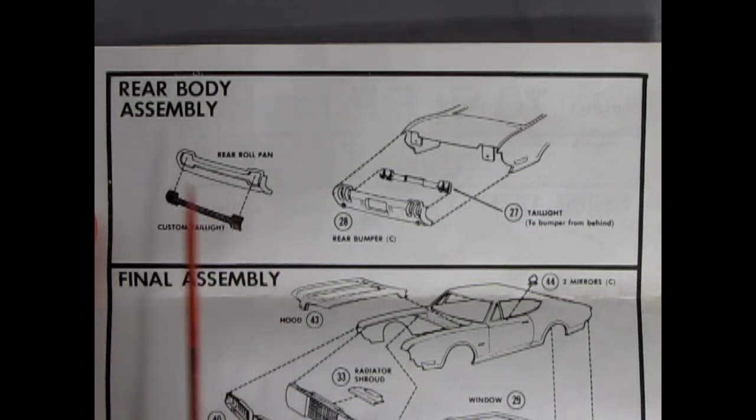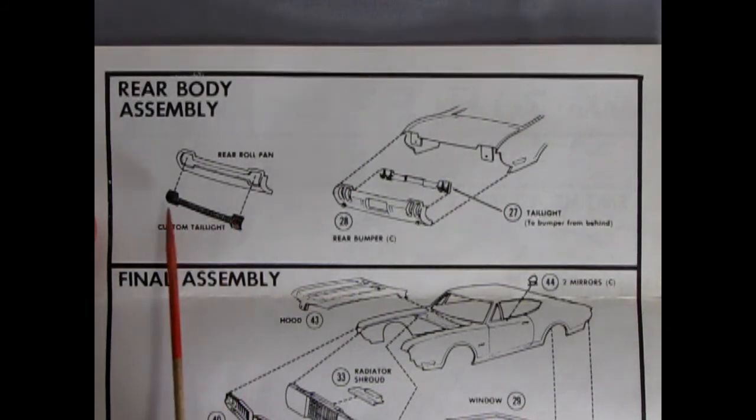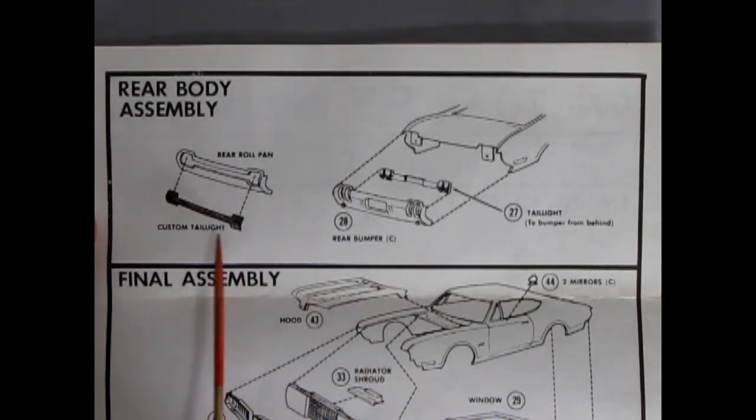Very simply here we have our rear body assembly. This is our first of the custom pieces. We have our rear rolled pan as well as our taillights popping in the back. It's got the upper taillights and then a long piece connecting in between which would look nice if you lit this actually.